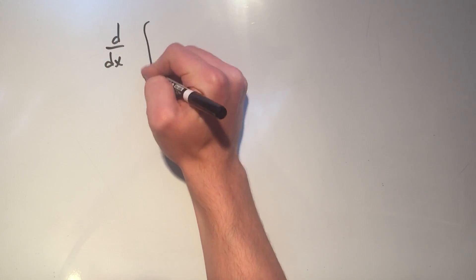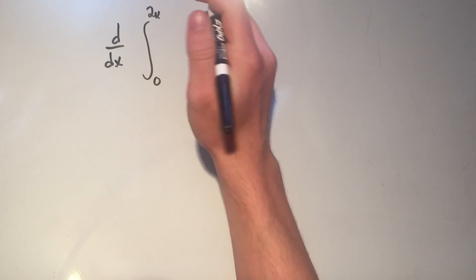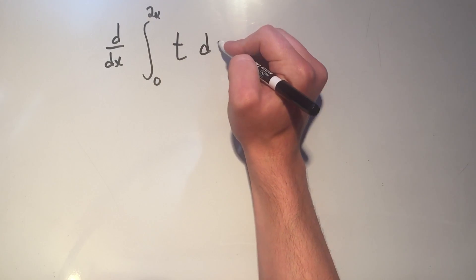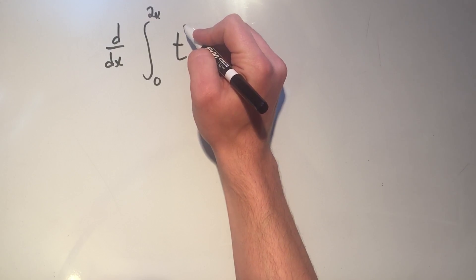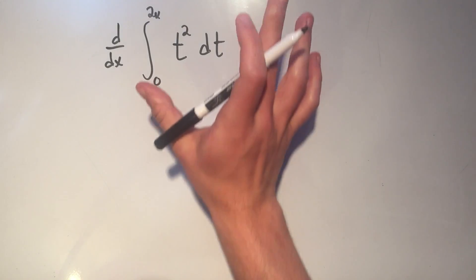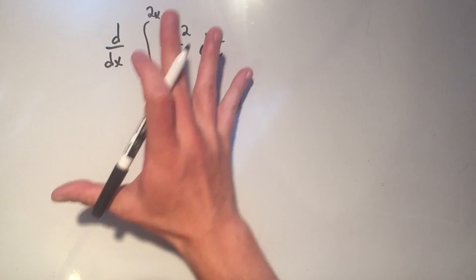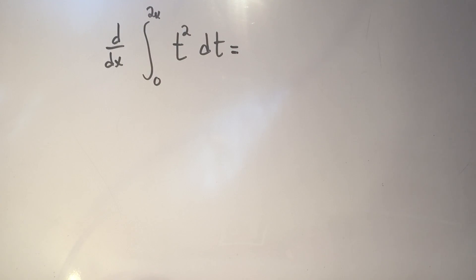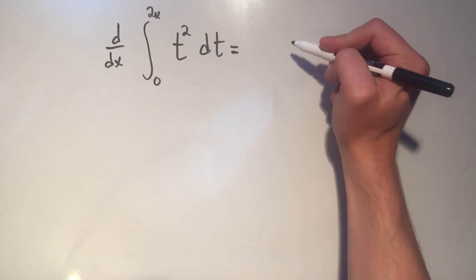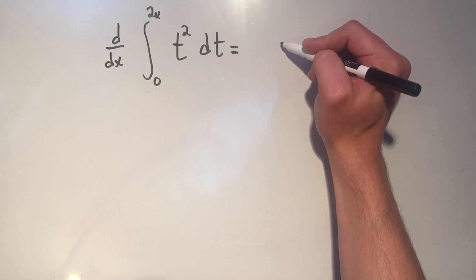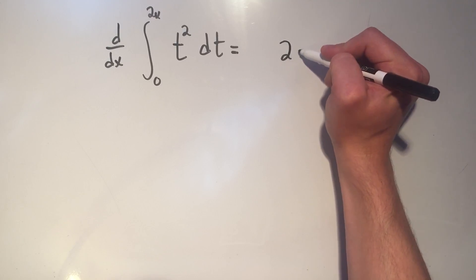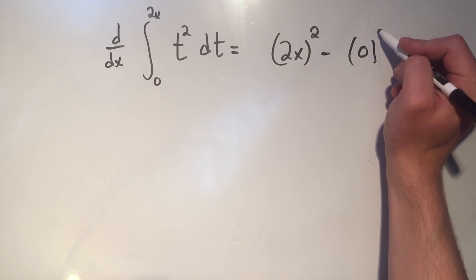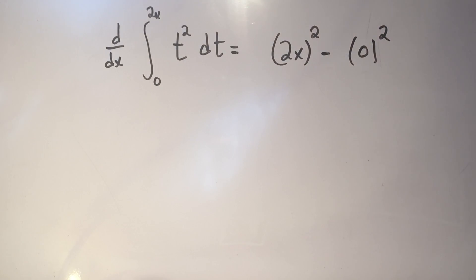So here, I want to take the derivative of this integral — I'll just make the integrand t squared. Here's how we do it: if I'm taking the derivative of the integral, they go away. But by the fundamental theorem of calculus, I need to evaluate at the upper limit. So wherever I see t, I evaluate at the upper limit minus evaluate at the lower limit.